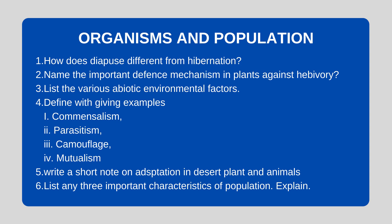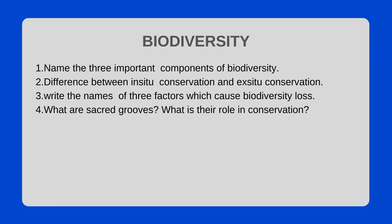Organisms and Population: How does diapause differ from hibernation? Name the important defense mechanisms in plants against herbivory. List the various abiotic environmental factors. Define with examples: commensalism, parasitism, camouflage, and mutualism. Write a short note on adaptations in desert plants and animals. List any three important characteristics of population and explain them.